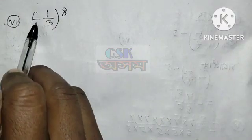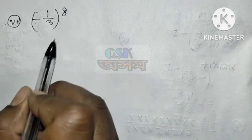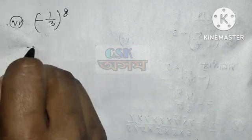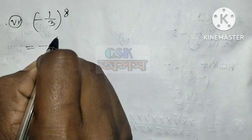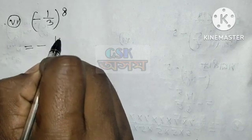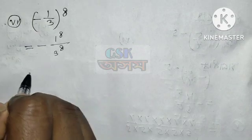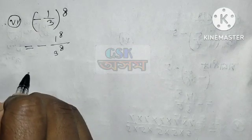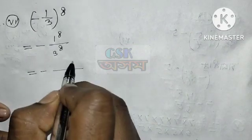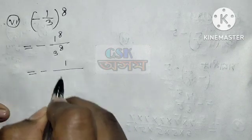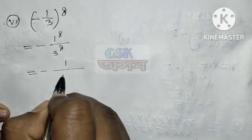Question 6 today: minus 1 by 3 to the power 8. So that gives us minus 1 to the power 8, divided by 3 to the power 8. Because 3 to the power 8 means all eight factors of 3.